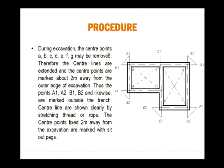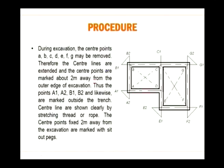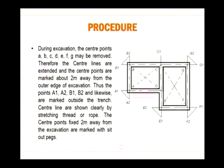During excavation, the centre points A, B, C, D, E, F, G may be removed. Therefore, the centre lines are extended about 2 meters away from the outer edge of excavation, and the new points A1, A2, B1, B2 etc. are marked outside the trench. When you see B1 and B2 you will know the triangle connecting these two points leads back to point B. Centre lines are shown clearly by stretching thread or rope, and the centre line is fixed 2 meters away from the excavation, marked with set-out pegs.